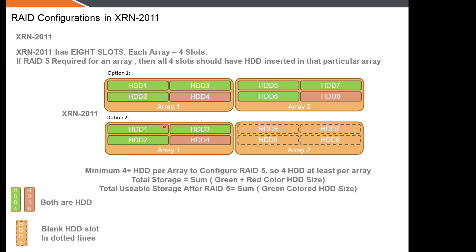You can have another option of just one array with four hard disks and the second array blank — this is also a supported configuration. However, if you have only three hard disks, that is not supported; you should have at least four. The total storage is the sum of all HDD sizes, but the usable storage after RAID 5 is equal to the sum of the green-color HDDs. For example, if you insert four 1TB drives, the usable storage is 3TB, although the total is 4TB.